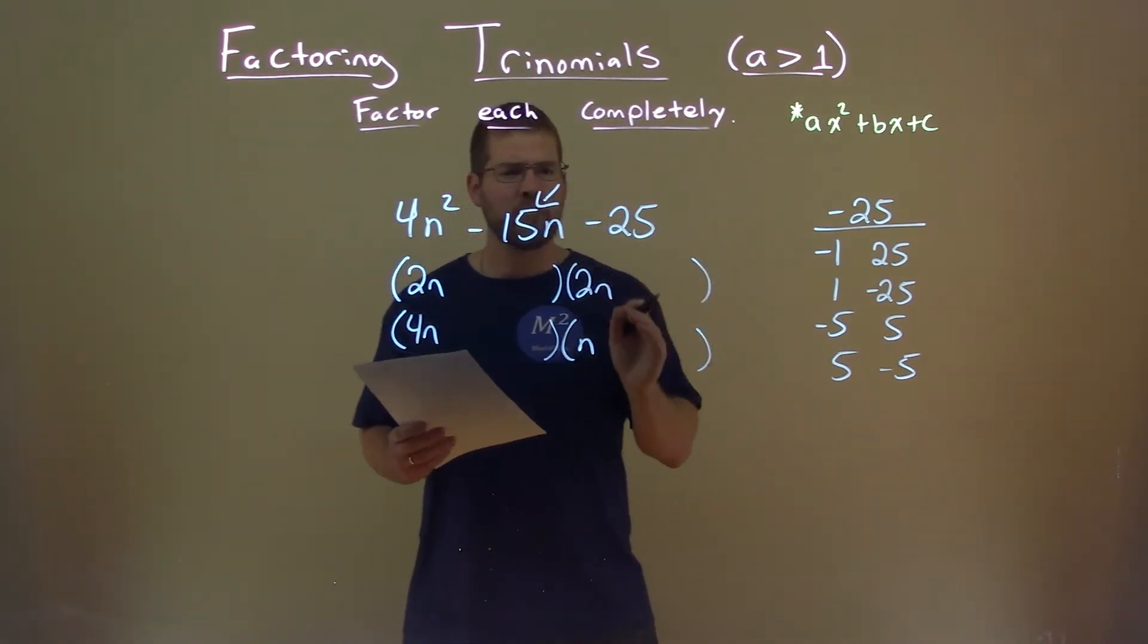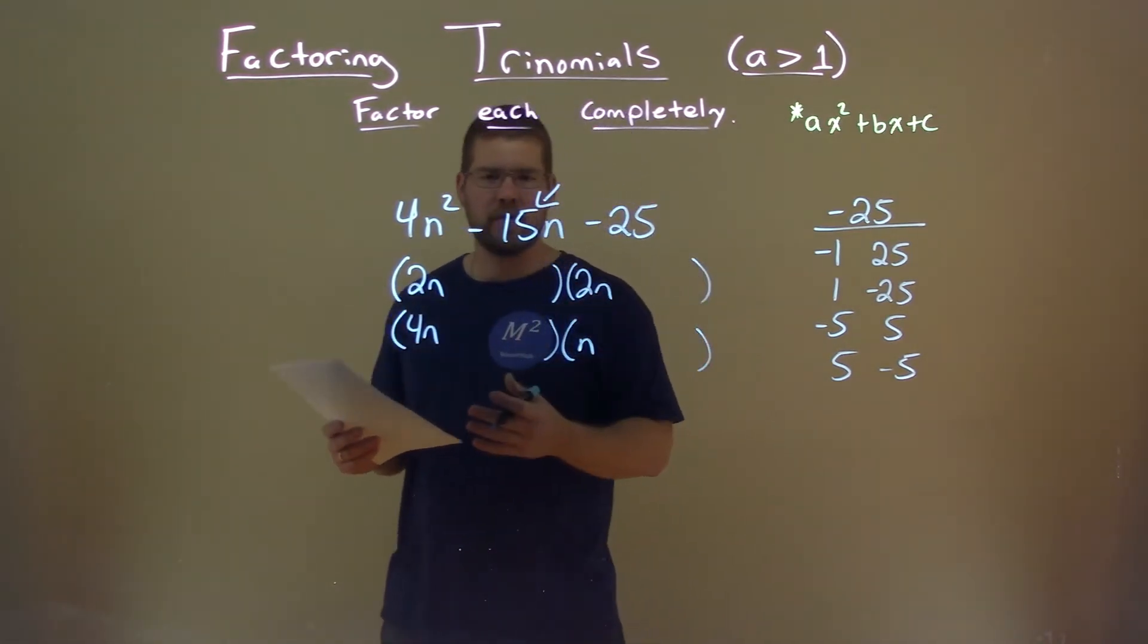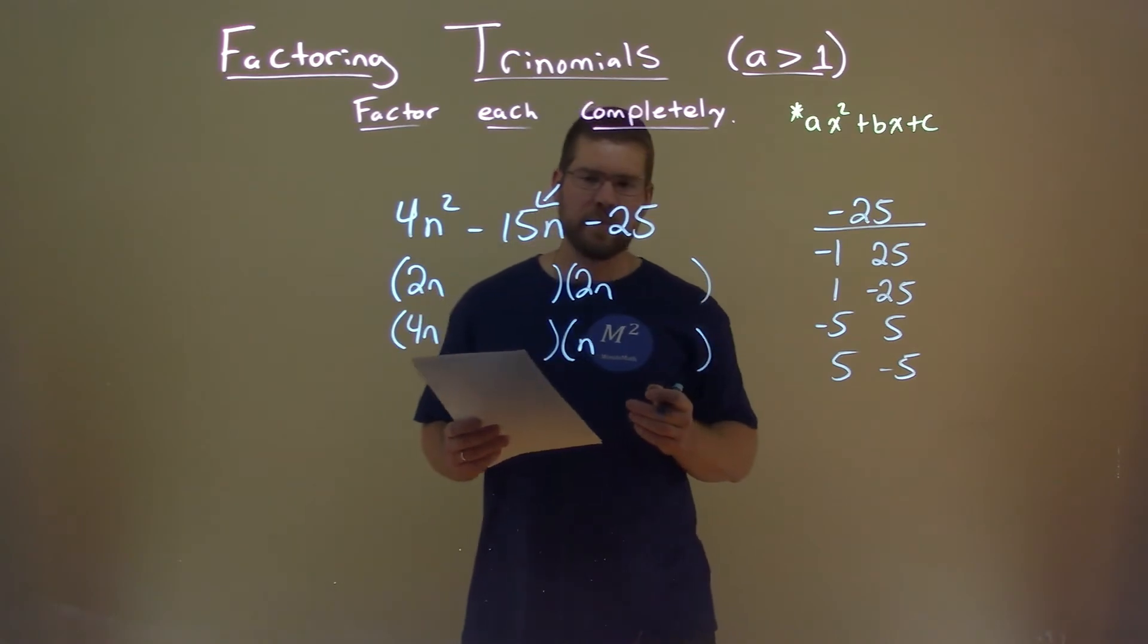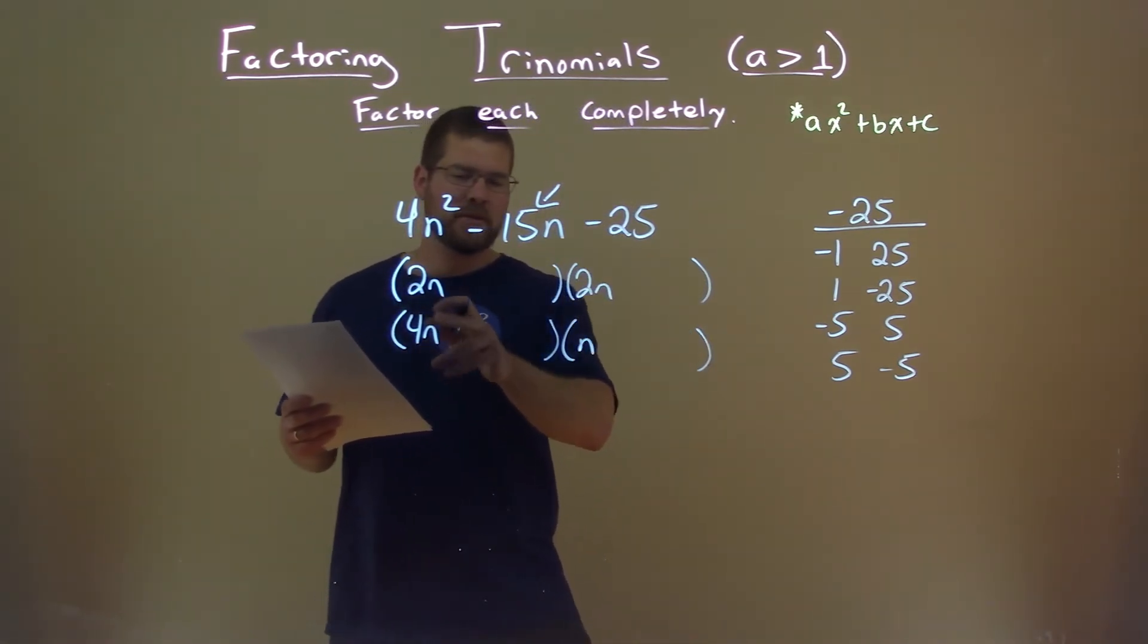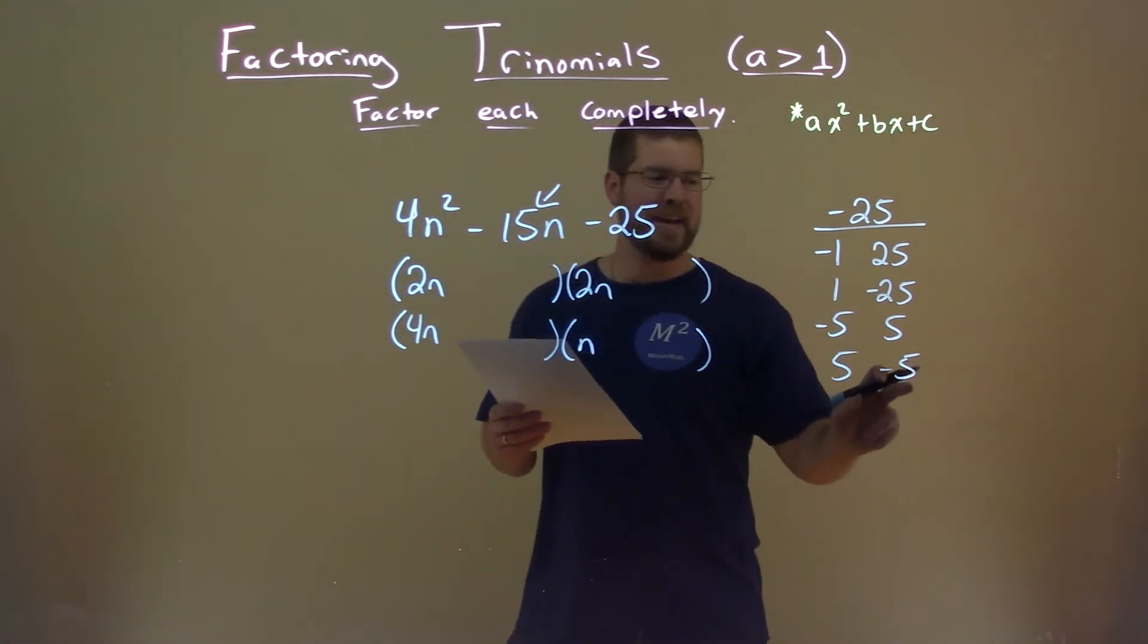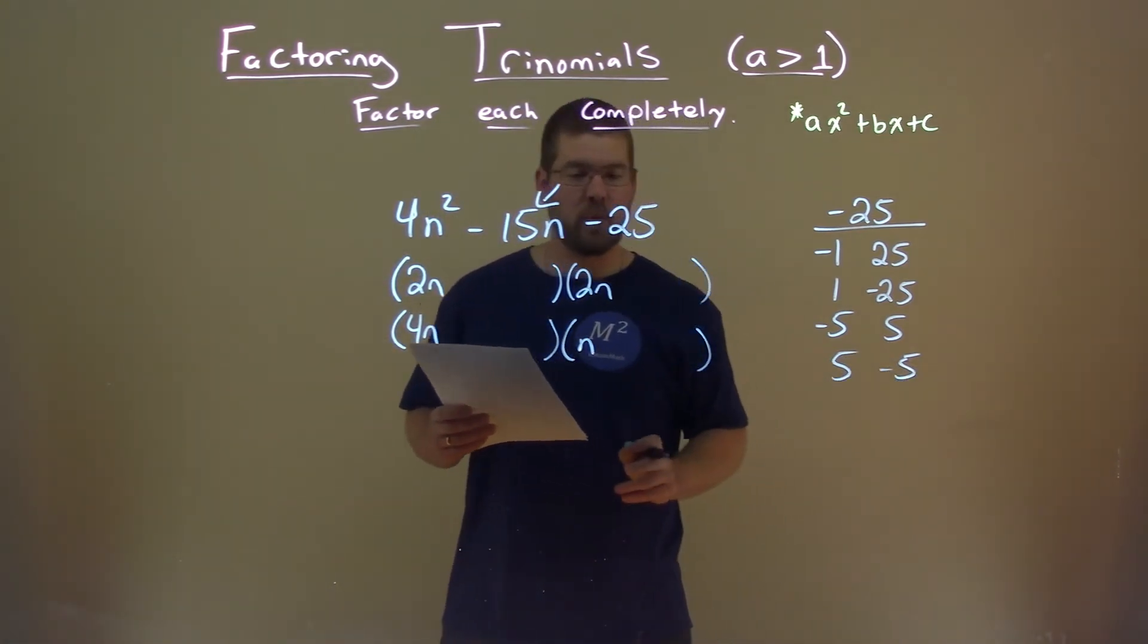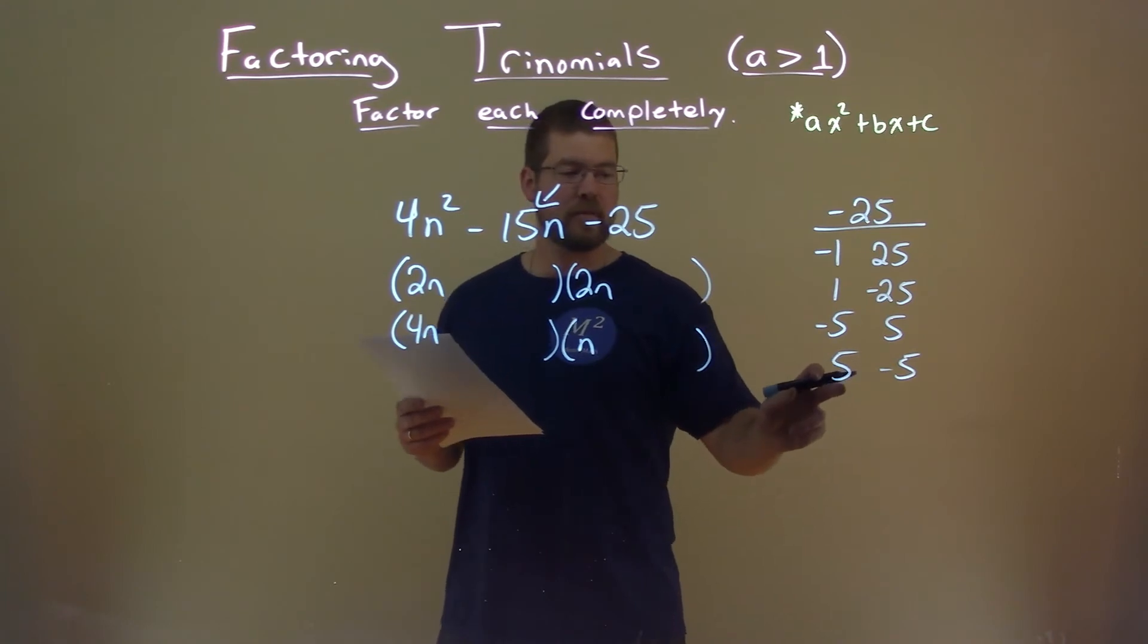I'm trying to make my first guess as close as possible to negative 15, and I kind of get there by either 4n or 2n, but I'm thinking 4n times negative 5 gives me negative 20, plus a positive 5 gives me negative 15.